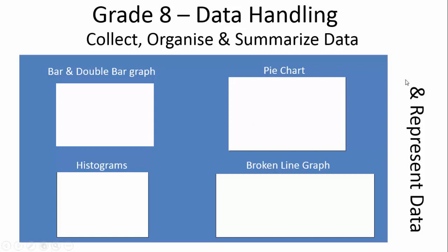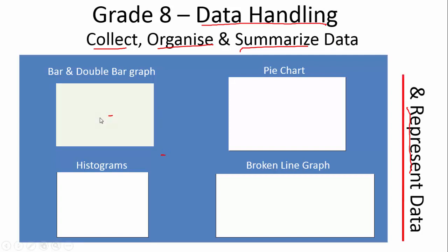Now we're going to talk about representing data - that's what we've been leading up to this whole time. We're still in the data handling section. We collected the data with tallies and tables, organized it with a stem-leaf diagram, and learned about mean, median, mode, and range. Now we're going to represent the data and make it much more user-friendly. We're going to start with a bar and double bar graph, and by the end of this video we would have filled in this picture.